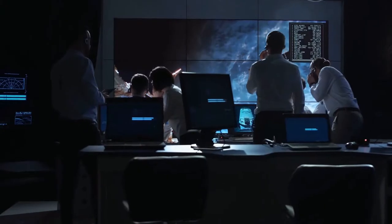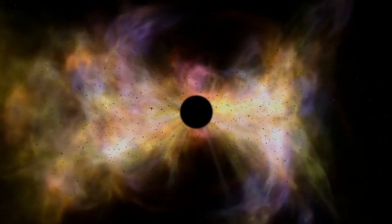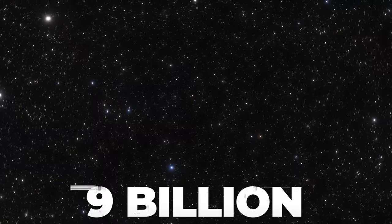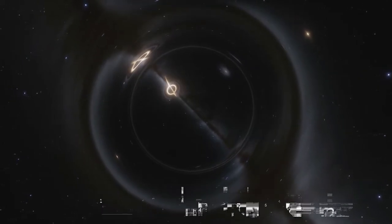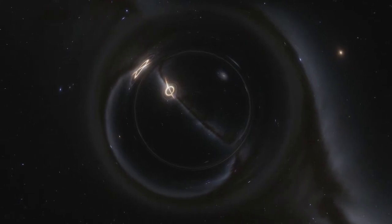Researchers observing a supermassive black hole report signs that it has a closely orbiting companion. Locked in an epic cosmic waltz 9 billion light years away, two supermassive black holes called the binary appear to be orbiting around each other every two years.